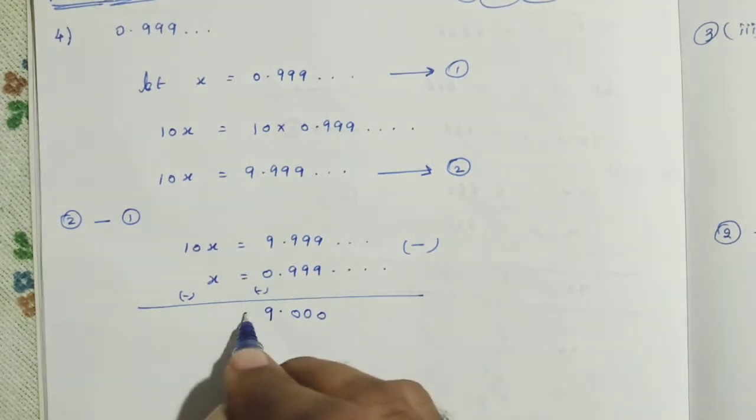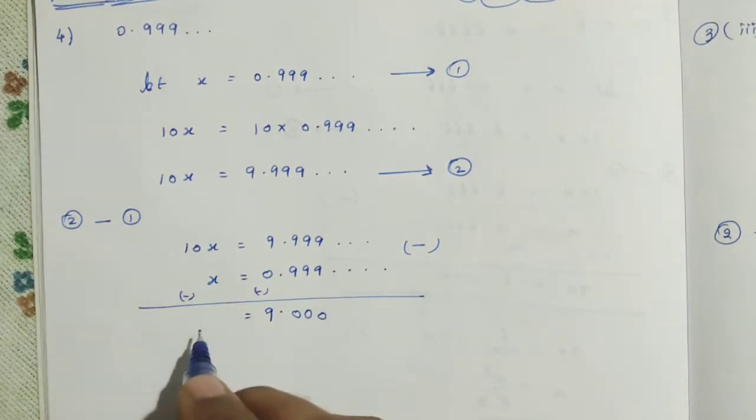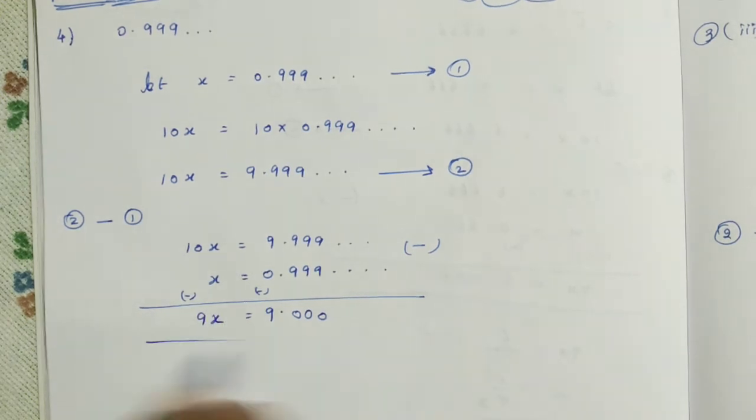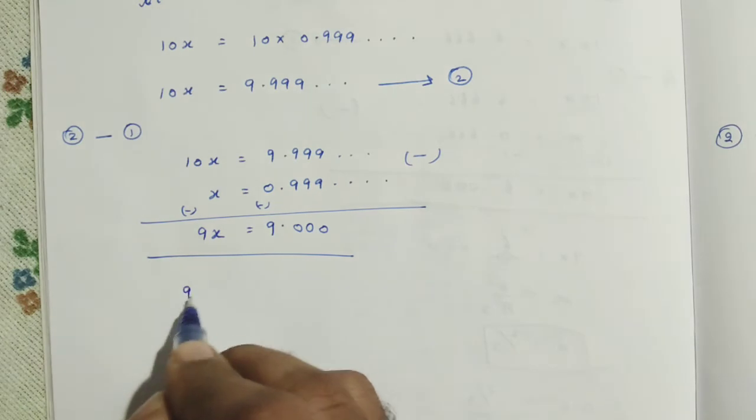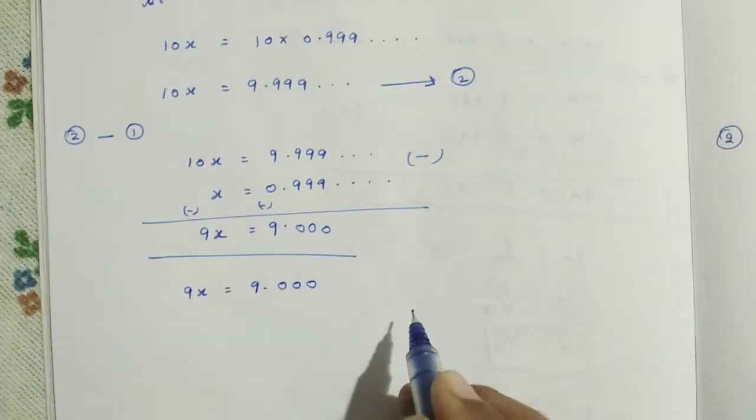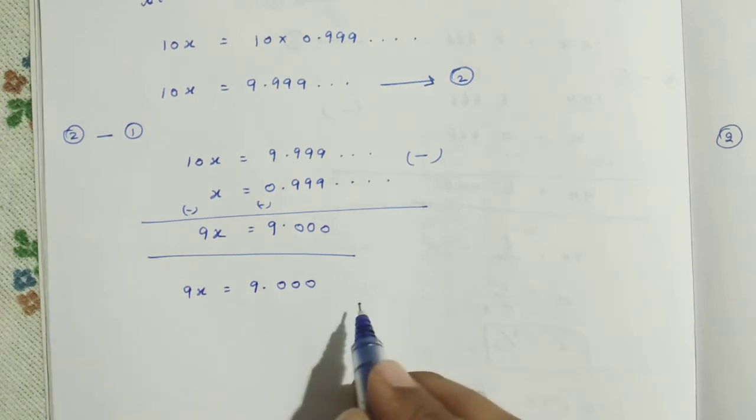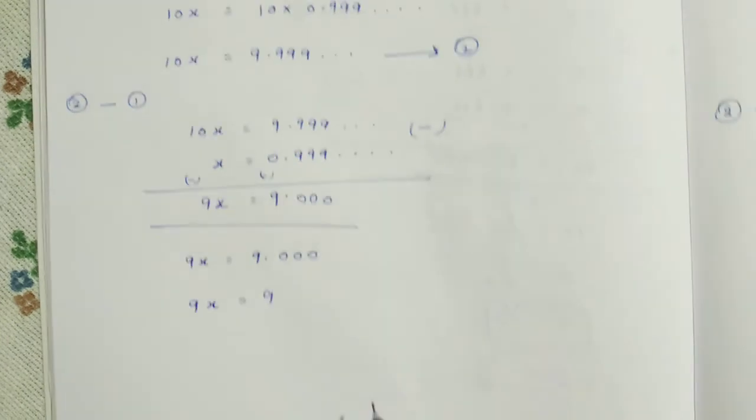Which is equal to, here, 10X minus X. 10X minus X equals 9X. So, we get 9X equal to 9.000. That is 9X equal to 9.000. After the decimal point, 0 will be there. 0 is not valid. So, 9X is equal to 9.